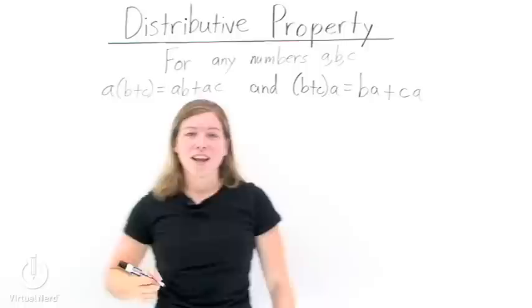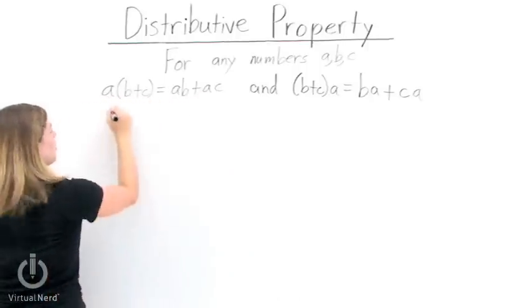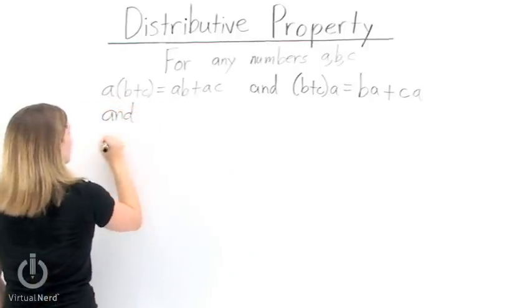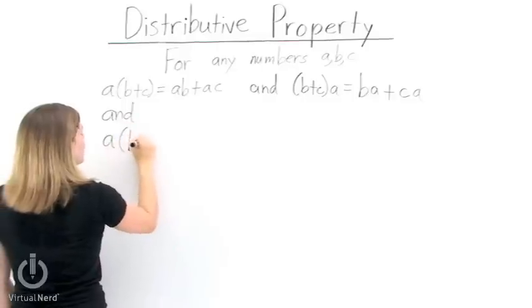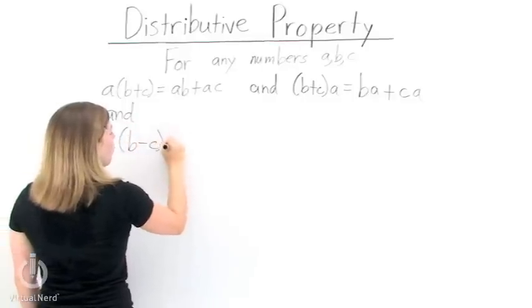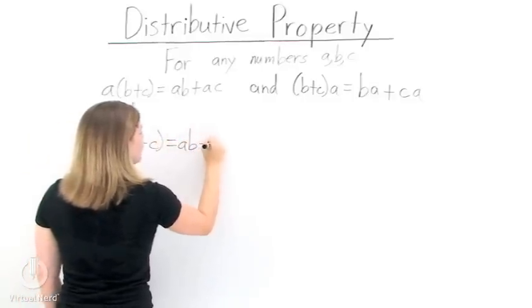Now, as I mentioned a second ago, we can use the distributive property for subtraction as well. All we need to do to get the subtraction version is just change all the additions above to subtractions.